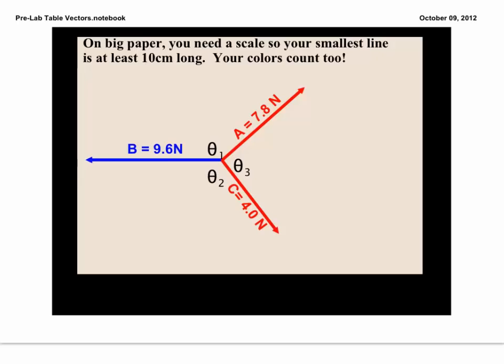What we need to do, the only rule, is that the shortest or smallest force needs to be at least ten centimeters long. So over here we have a four newton vector. This vector down here, vector C, needs to be at least ten centimeters long. It's going to be up to you to figure out what scale you're going to need to make sure that you can get that vector to be at least ten centimeters long.